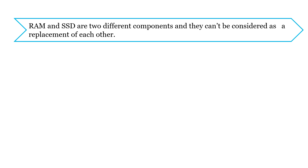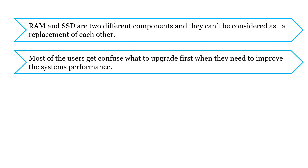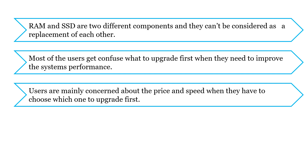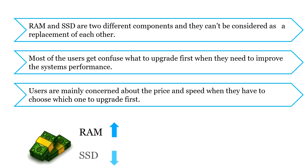RAM and SSD are two different components and you cannot consider them as a replacement of each other. Both are equally important. We require RAM for running the entire computer system, as each running program requires space that is provided by RAM. And to store data permanently, we need SSD, as RAM doesn't retain data permanently. Most users get confused about what to upgrade first when they are struggling to improve their system's performance. Users are mainly concerned about price and speed. RAM is costlier than SSD, and the speed of RAM is much faster than SSD.